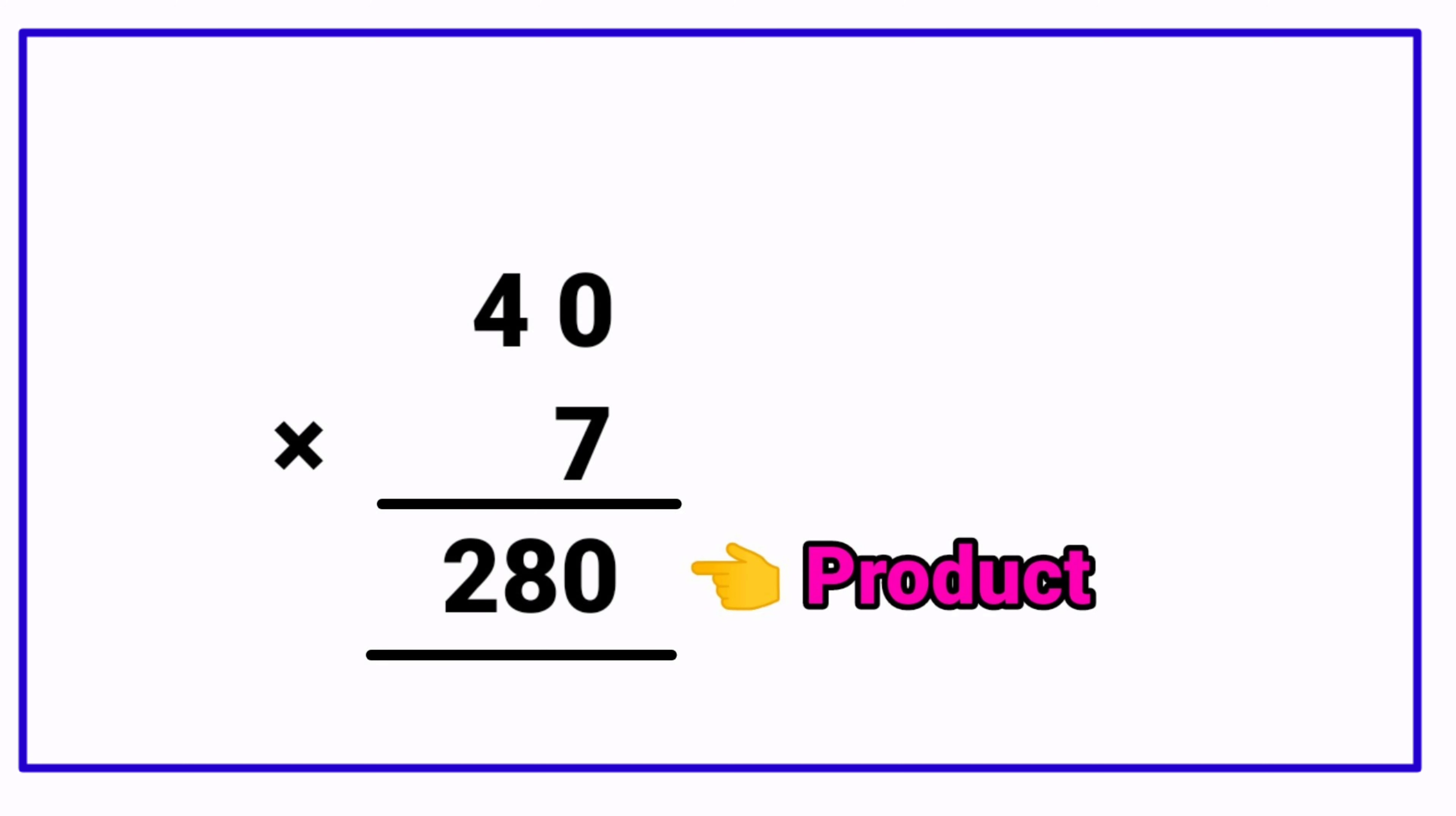Now let us see 50 cross 7. We can solve this sum using tables. Which table we can use in this sum? 7th table. See here.